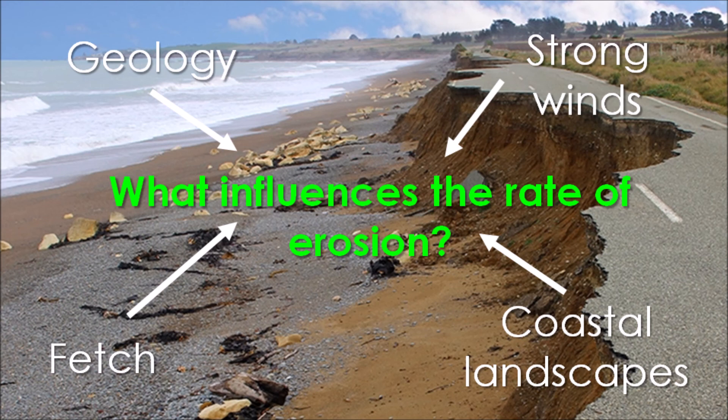Finally, we also have geology influencing erosion rates. We have resistant and less resistant rock present on our coastlines. Resistant rock is hard, tough, and very strong, and is therefore more resistant to erosion, whereas less resistant soft rock is more likely to be eroded. Boulder clay is a perfect example — if it comes into contact with water it erodes very, very quickly.